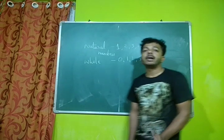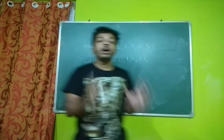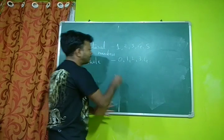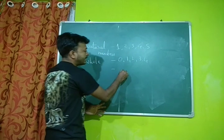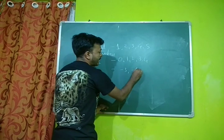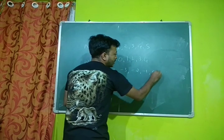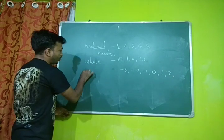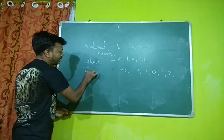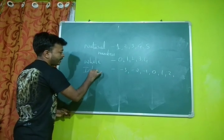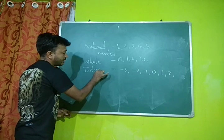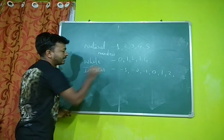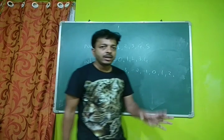If the numbers belong to negative numbers — so that is minus 3, minus 2, minus 1, 0, 1, 2, etc. — these are the group of integers.